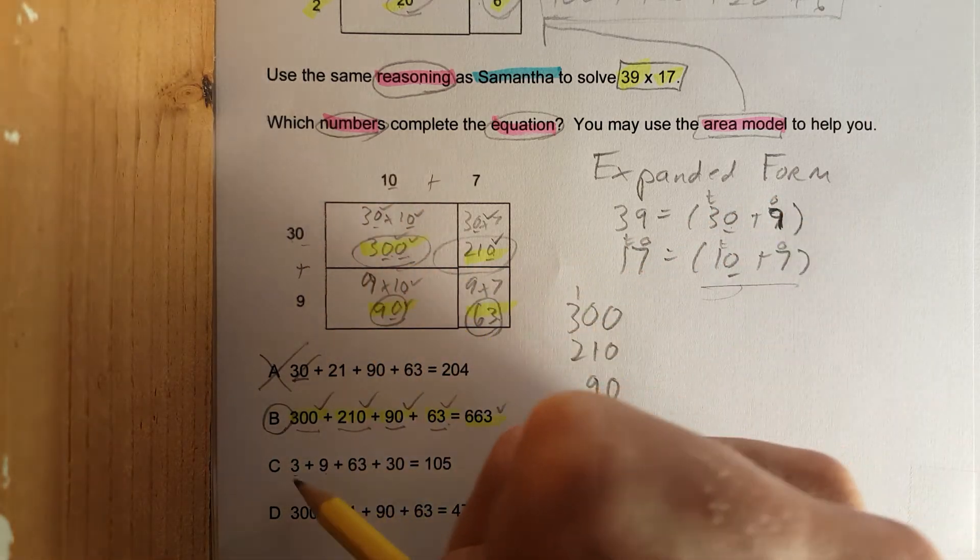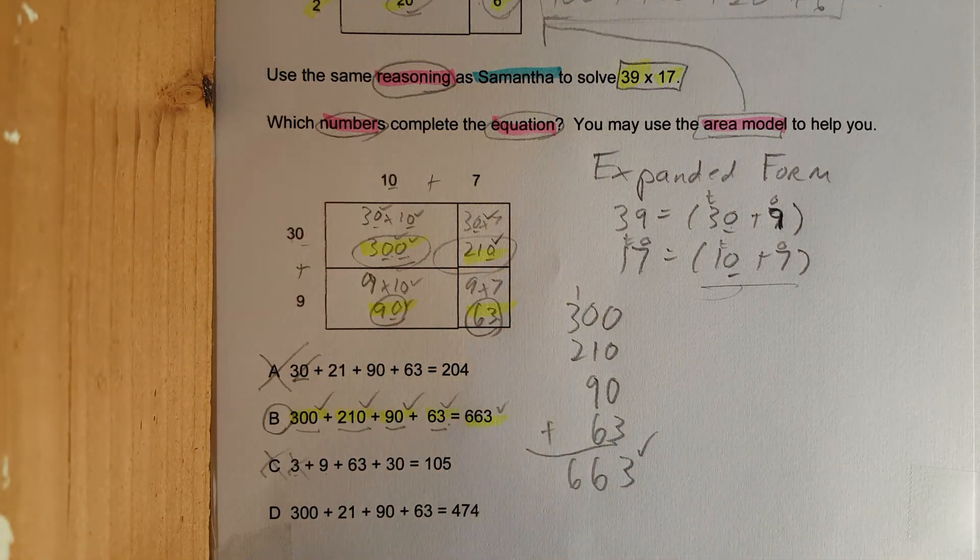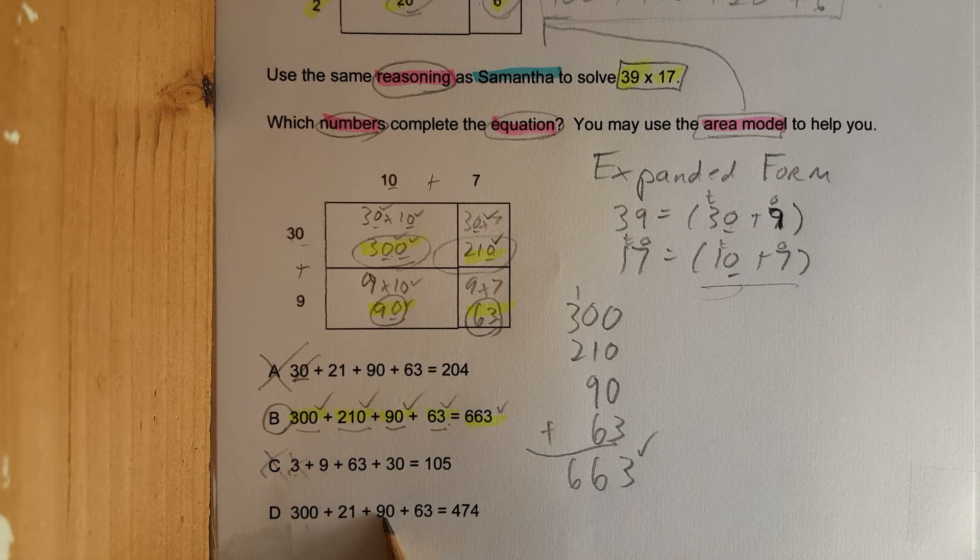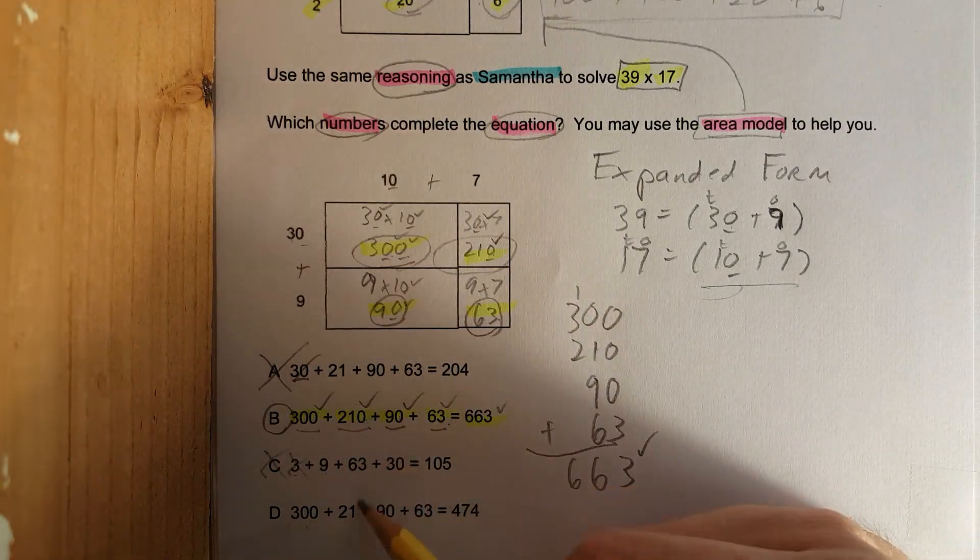And the last one, check this out, watch how close this is. 300, 90, 63, but one zero is missing. Problem, major problem.